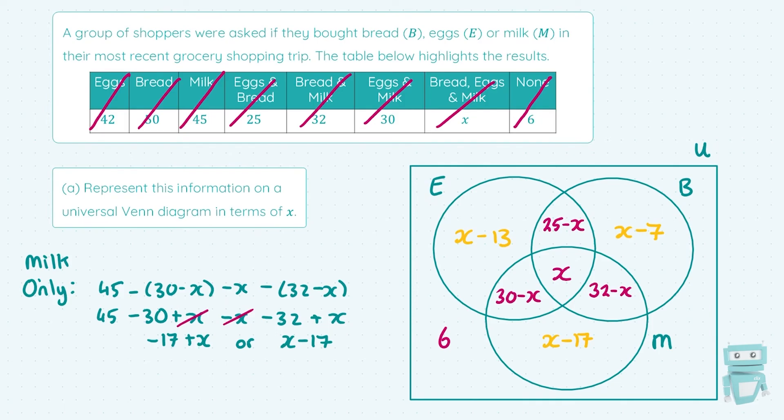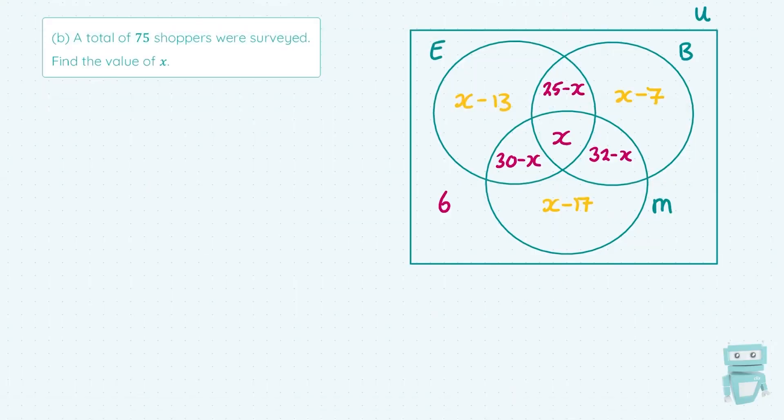To recap: we started with the middle, putting X in. We worked to the two-way intersections, subtracting X each time. Then to find the eggs only, bread only, and milk only regions, there's algebra involved: take the total and subtract each region already filled in, being very careful with minuses and brackets. These questions can add more algebra, so let's see an extension.